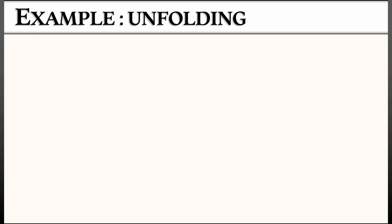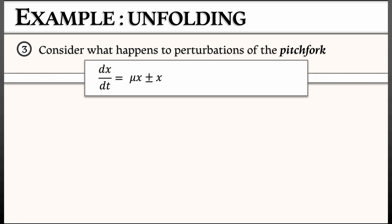So let's consider what happens when we perturb the pitchfork bifurcation. I'm going to start with dx/dt equals mu x plus or minus x cubed, so subcritical, supercritical, one of those.